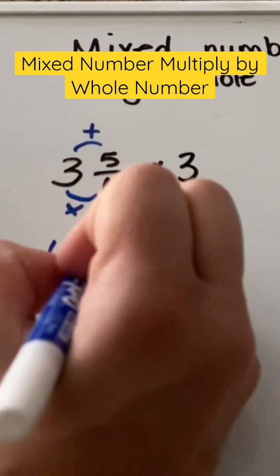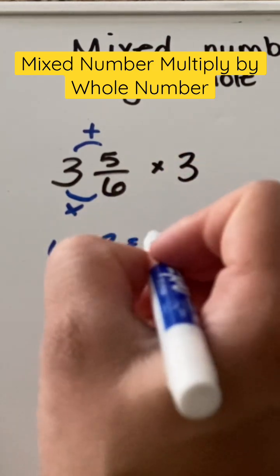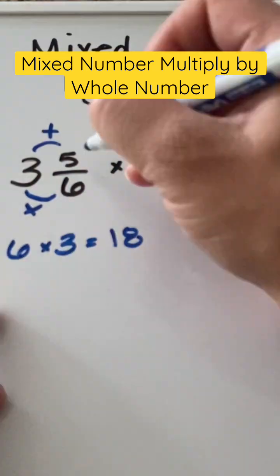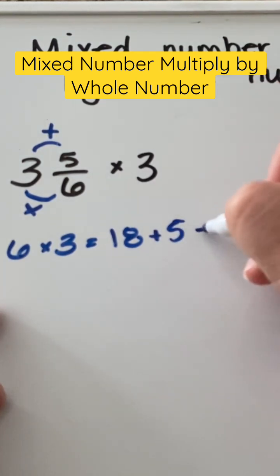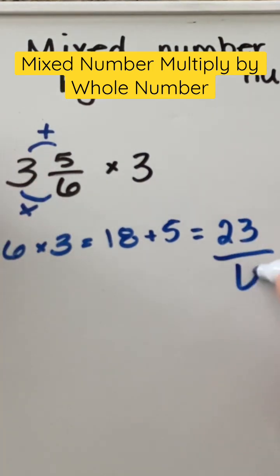So we have 6 times 3, which is 18. 18 plus 5 is going to give us 23. And so it's going to be under 6.